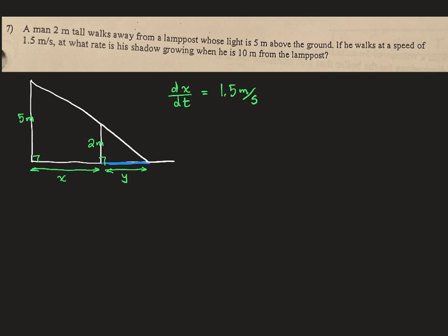So that's y changing. So dy/dt is a question mark when he's 10 meters from the lamppost. So when x equals 10 meters, that's our moment in time, our snapshot in time, which we don't sub in or do anything with until we have the derivative.